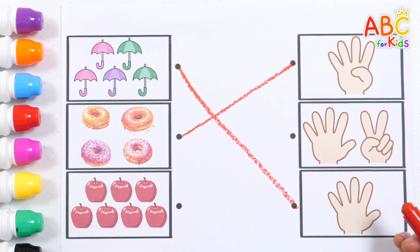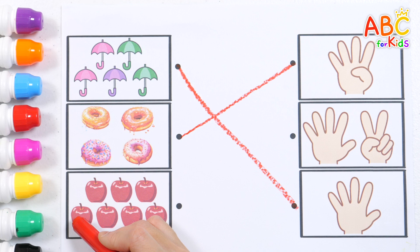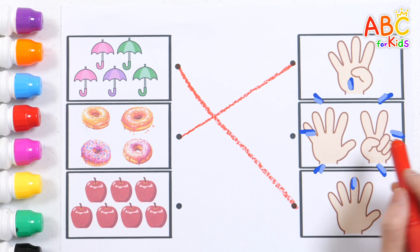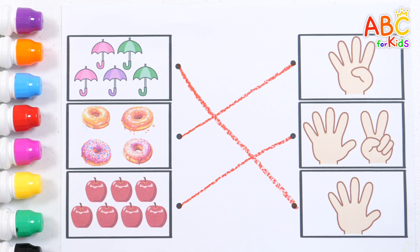Let's count the apples. 1, 2, 3, 4, 5, 6, 7. Number 7. 7 apples. Good job!